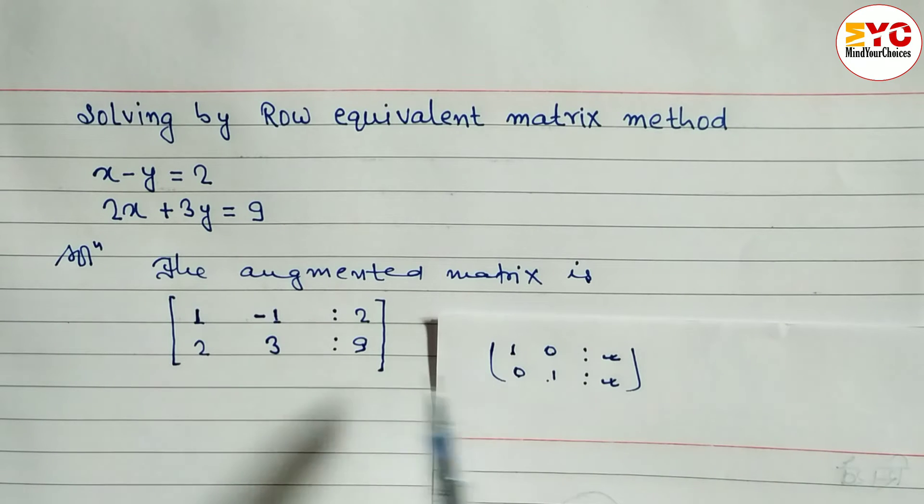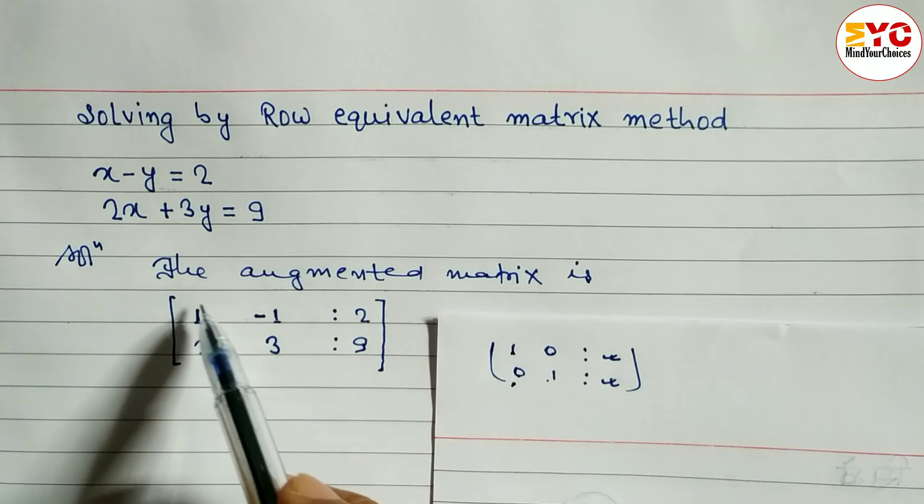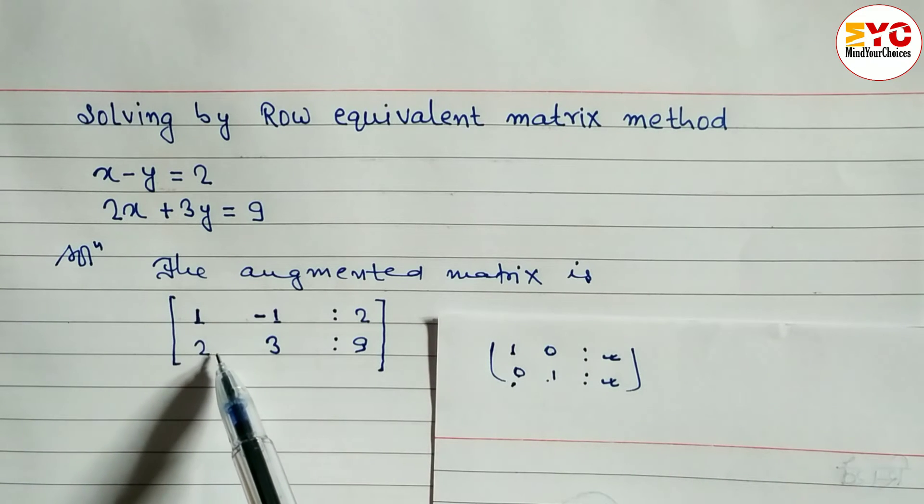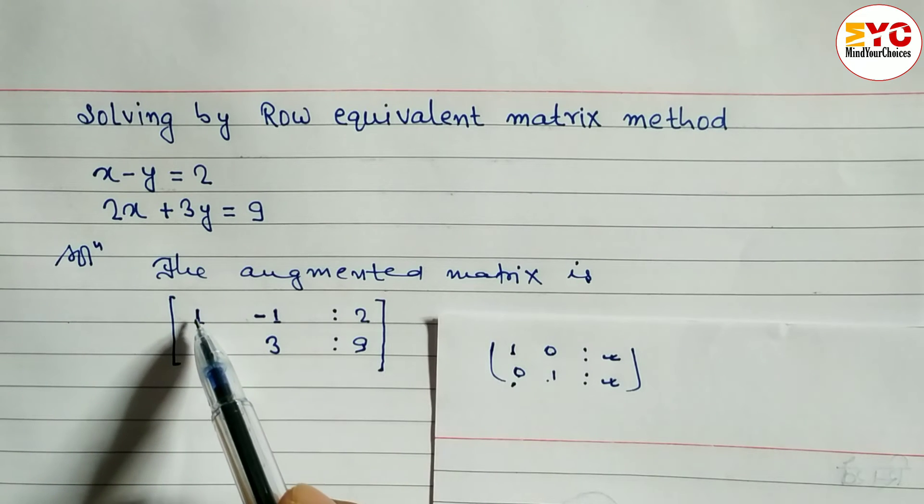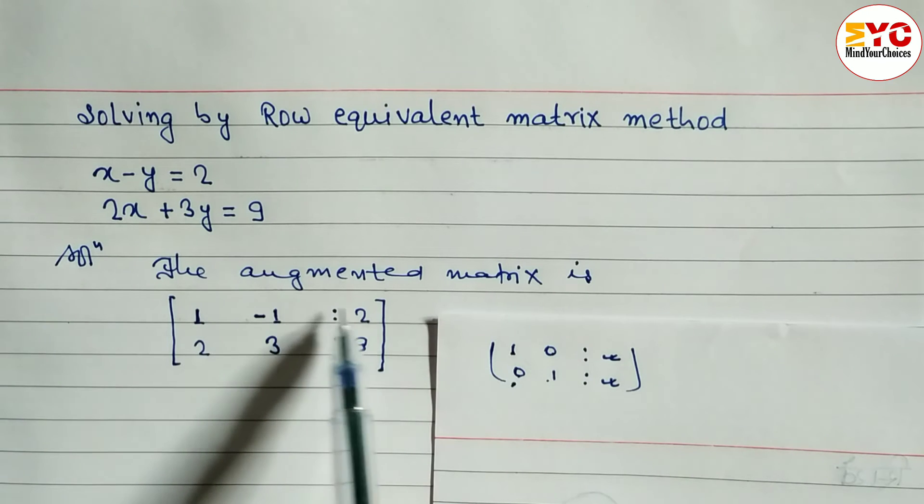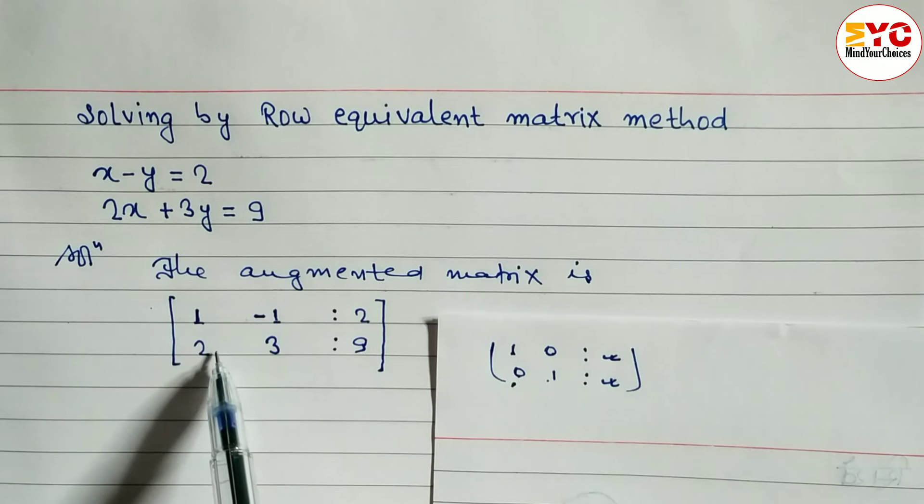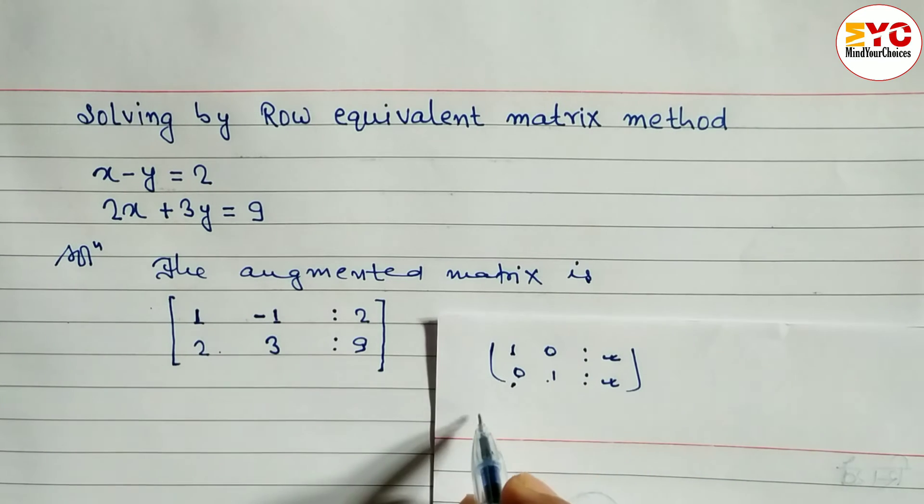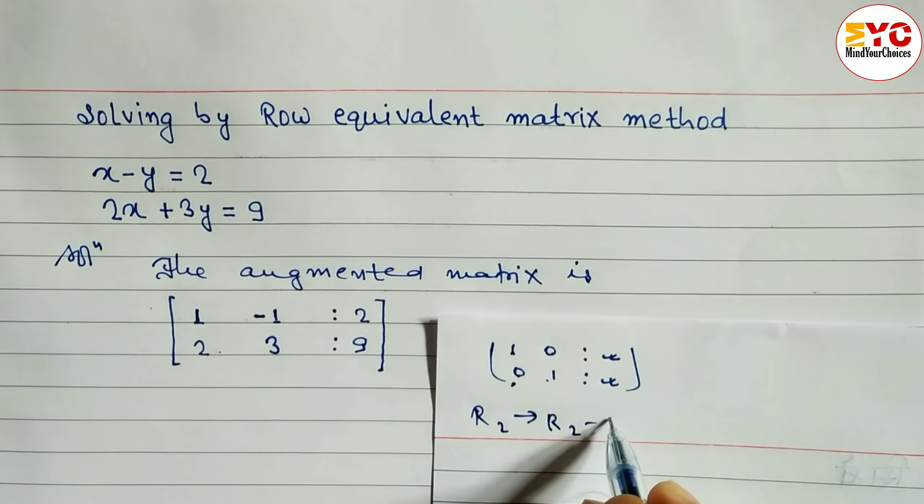So how to convert this 2 in the form of 0? When you multiply this by 2. So what happened? 2 into 1, 2. And when you subtract here from row 2 and row 1, what we will get? Here 0 we will get. When you multiply 1 by 2, we have to multiply whole row by 2. So 2 into 1, 2. And when you multiply here 2 minus 2, we get 0. So what we are going to do? R2 tends to R2 minus 2 R1.